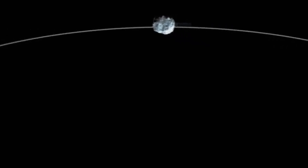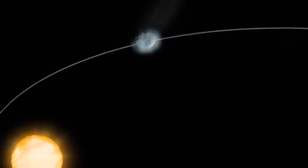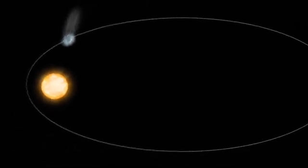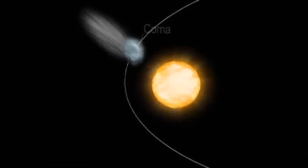When a comet gets close to the sun, its outer layers of ice melt and evaporate, creating an atmosphere of gas and dust around the comet. This atmosphere is called a coma.